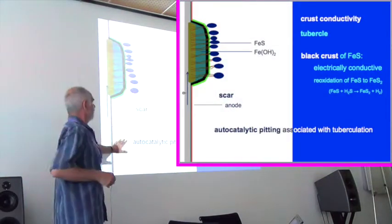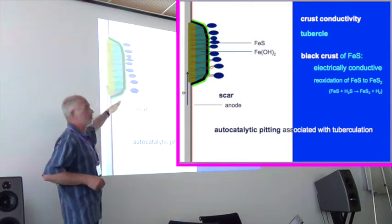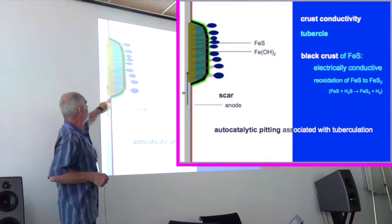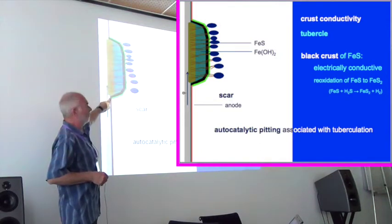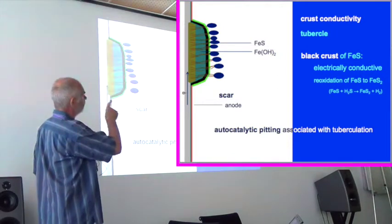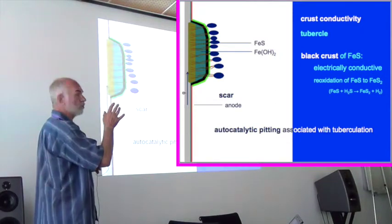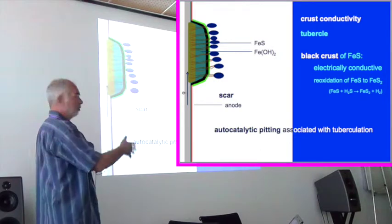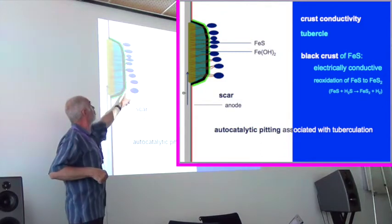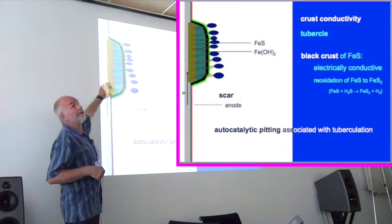This auto-catalytic pitting, associated with this tuberculation, has as a result a thick magnetite layer. And important is that it's electrically conductive. So if people want to use cathodic protection whatsoever, the conductivity is going over your anaerobic community. It's a very strange effect.